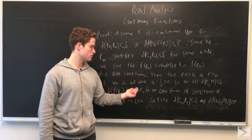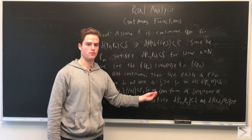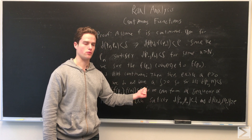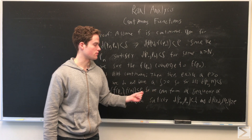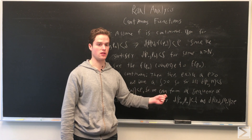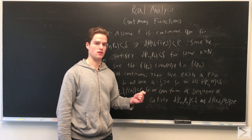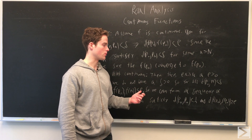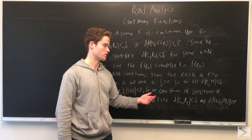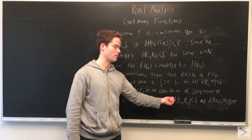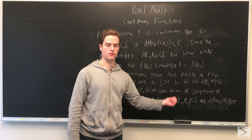That means we can form a sequence of points where the distance between P0 and P_N is less than 1 over N for every N greater than or equal to 1. So P_N converges to P0, but we can also select these points such that the distance between F of P0 and F of P_N is greater than or equal to epsilon — because if we couldn't select such a point, F would be continuous, but it's not. So we have a sequence P_N converging to P0 where F of P_N does not converge to F of P0.